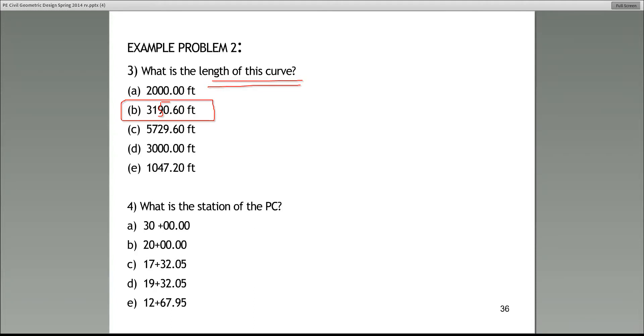Let's move on. What is the station of the PC? They give you enough information that you can calculate the station of the PI. So if you know the station of the PI, how do you come up with the station of the PC? Always take the station of the PI, subtract the tangent from it, in terms of stations.